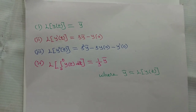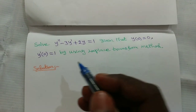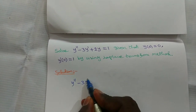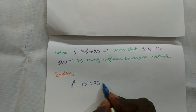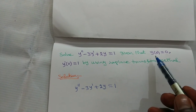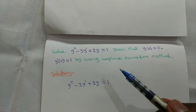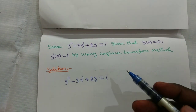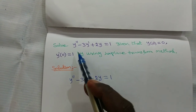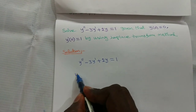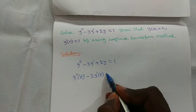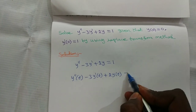The given differential equation is y double dash minus 3y dash plus 2y equal to 0. The dependent variable is y, and in Laplace transform the independent variable is always t. So we write the equation as y double dash of t minus 3y dash of t plus 2y of t equal to 1.